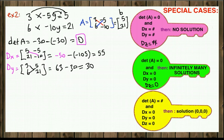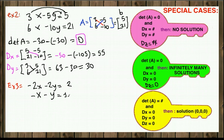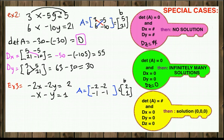In example 3, our system is negative 2x minus 2y equals 2 and negative x minus y equals 1. We put this into augmented matrix form: coefficients are negative 2 and negative 1 for x, negative 2 and negative 1 for y, and column B is 2 and 1. The determinant of A is negative 2 times negative 1 which is positive 2, minus negative 1 times negative 2 which is positive 2. So 2 minus 2 is 0 — again the determinant is 0, so we check DX and DY.